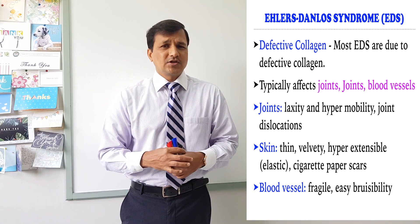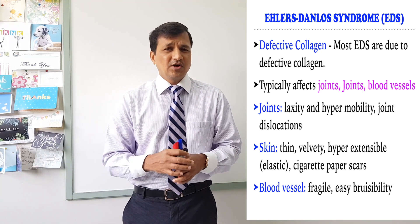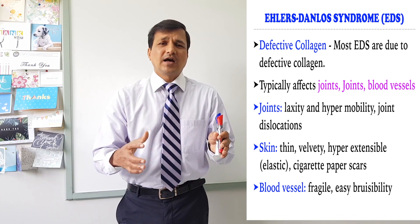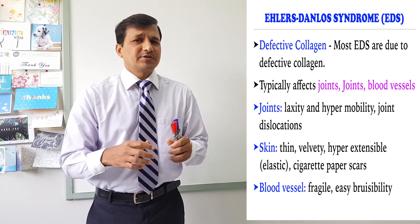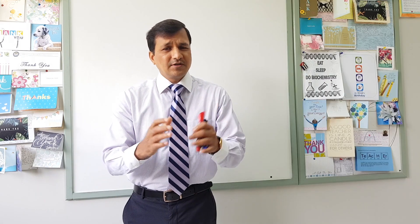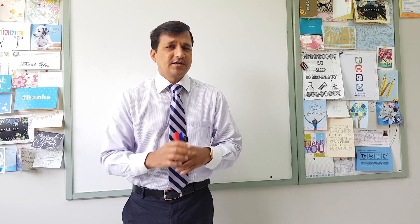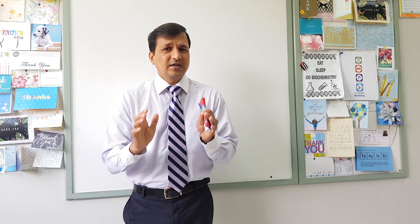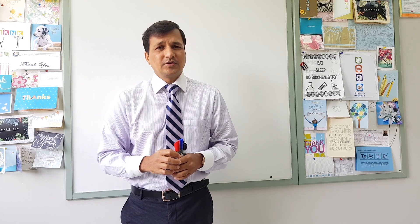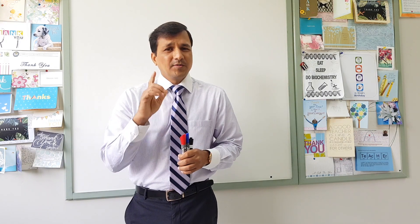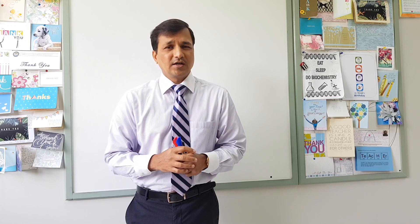Blood vessels are also affected in EDS because collagen is abnormally synthesized. Patients will have easy bruisability — blood vessels, especially under the skin, can rupture with minimal friction, causing bruises. Note that the defective molecule in EDS is collagen, not elastin. Elastin is fine; the hyperelasticity is due to a defect in collagen that interacts with elastin.